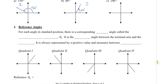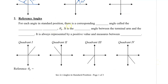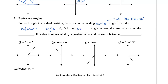Now let's take a look at what a reference angle is. For each angle in standard position, there's a corresponding acute angle called the reference angle. We represent that with theta with a subscript r. An acute angle is an angle that is less than 90 degrees. The reference angle has to be acute, and it is the angle between the terminal arm and the x-axis. It is always represented by a positive value, and it measures between 0 degrees and 90 degrees.